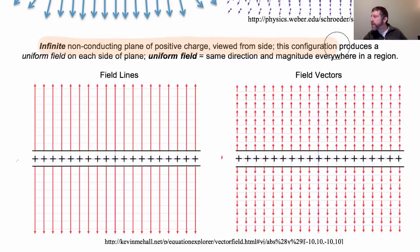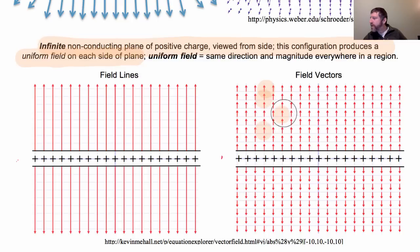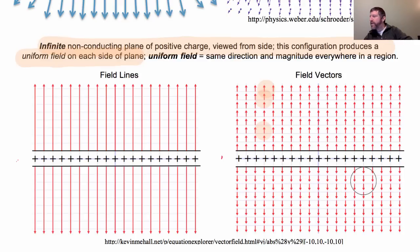If you have an infinite plane of positive charge — we're making it non-conducting, as you'll see why in a minute — it's a uniform field. It means the field is all in the same direction and all the same magnitude everywhere. These lines do not get any farther or closer to each other. In field vector form, you can see all vectors have the same length everywhere, all pointing upward on one side and downward on the other.